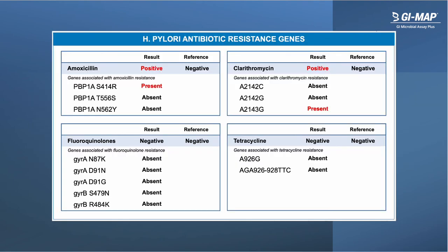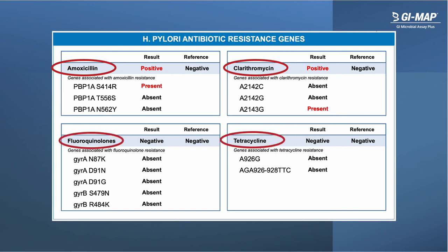On the final page of the GI Map report is the antibiotic resistance panel for H. pylori. This panel shows the results for the detection of antibiotic resistance genes in the H. pylori genome to common types of antibiotics, including amoxicillin, clarithromycin, fluoroquinolones, and tetracycline. This information can be helpful for selecting specific antibiotics for H. pylori treatment.